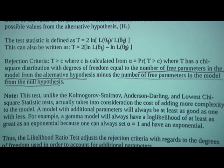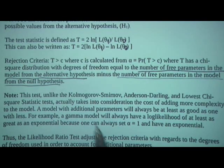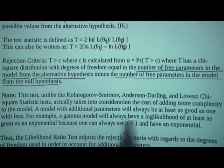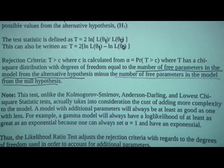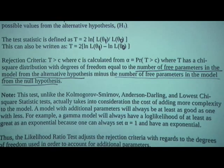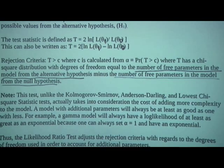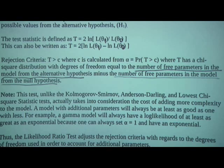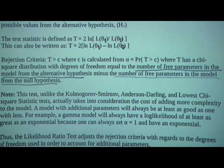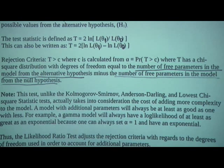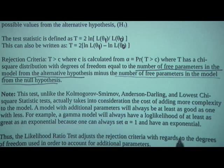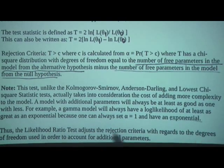The reason the likelihood ratio test is used instead of, say, the Kolmogorov-Smirnov, Anderson-Darling, or chi-square statistic tests, is because it takes into consideration the complexity of the model. If you have additional parameters, the model will yield at least as accurate a result, but complexity is not always better — there is a cost to adding additional parameters. The example given here is the exponential versus the gamma.